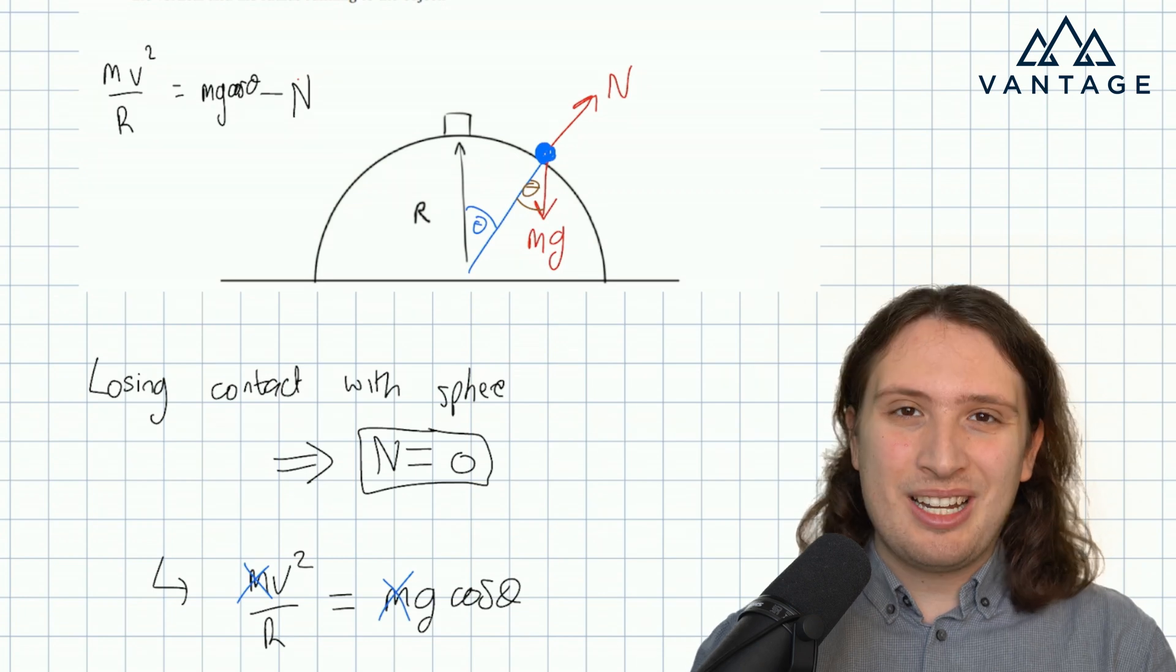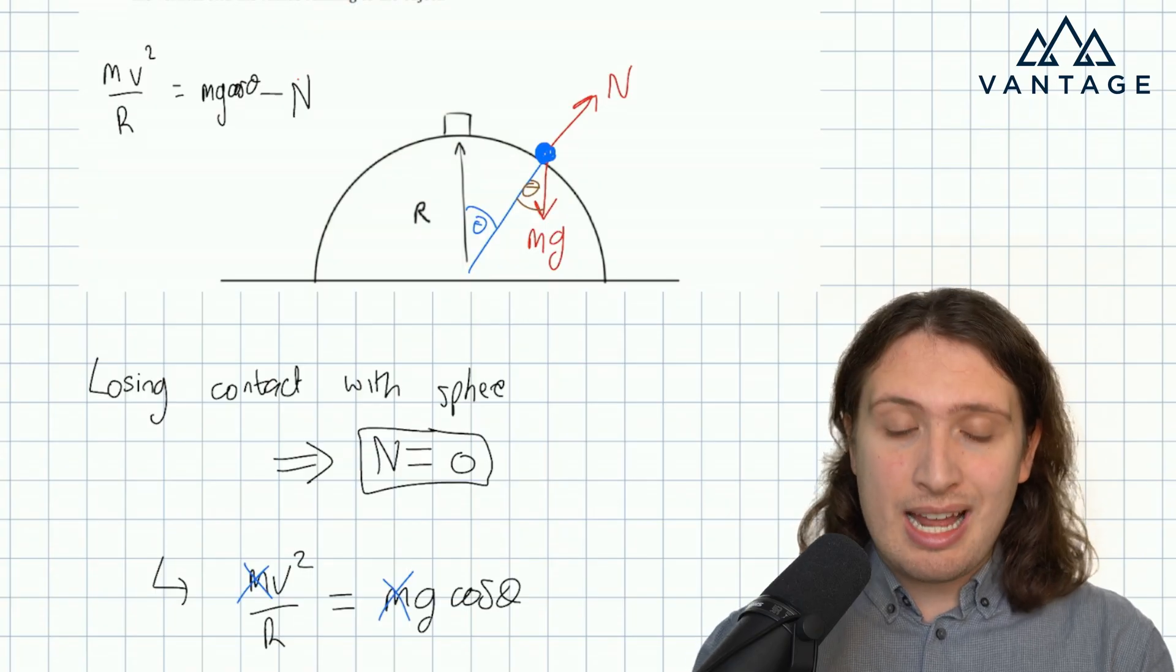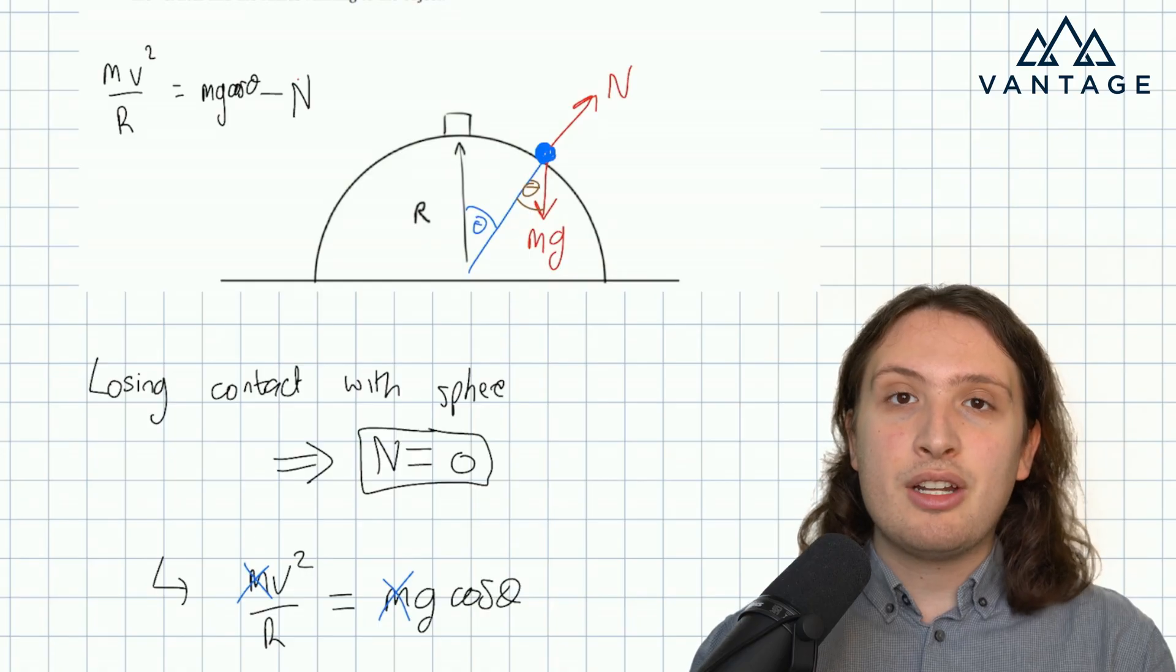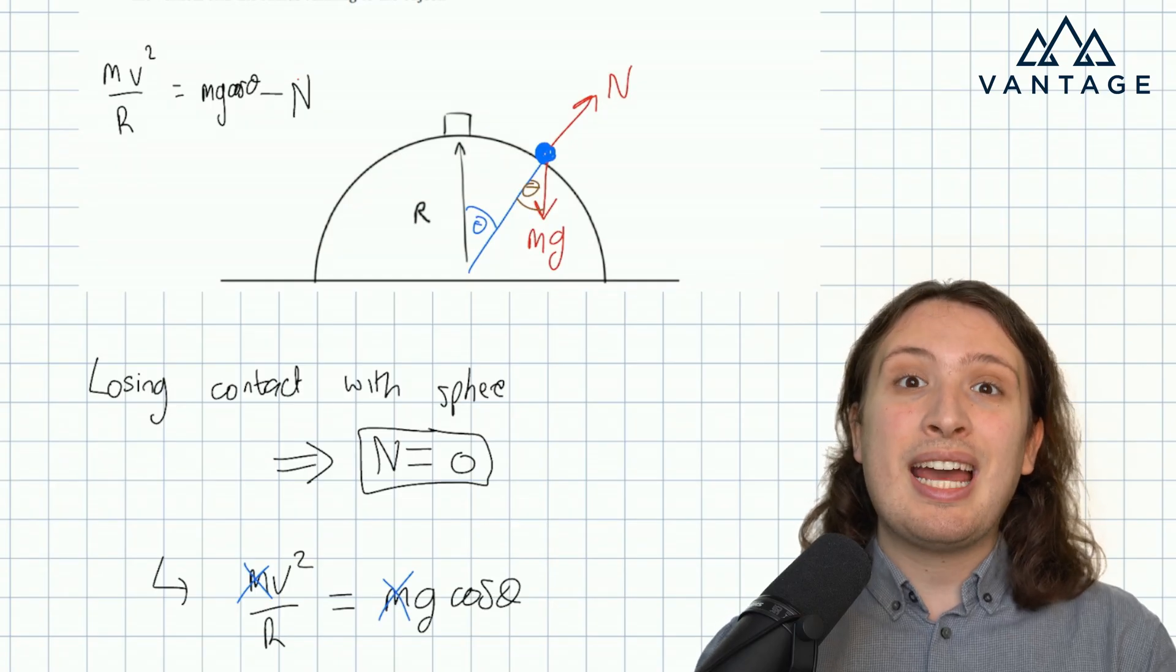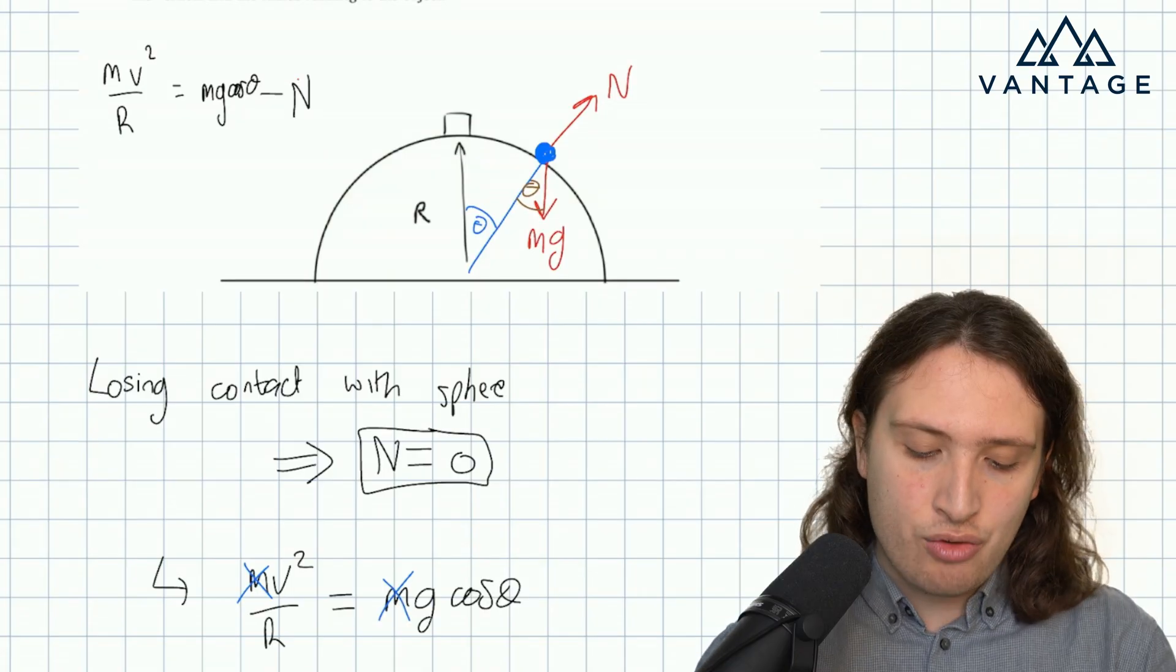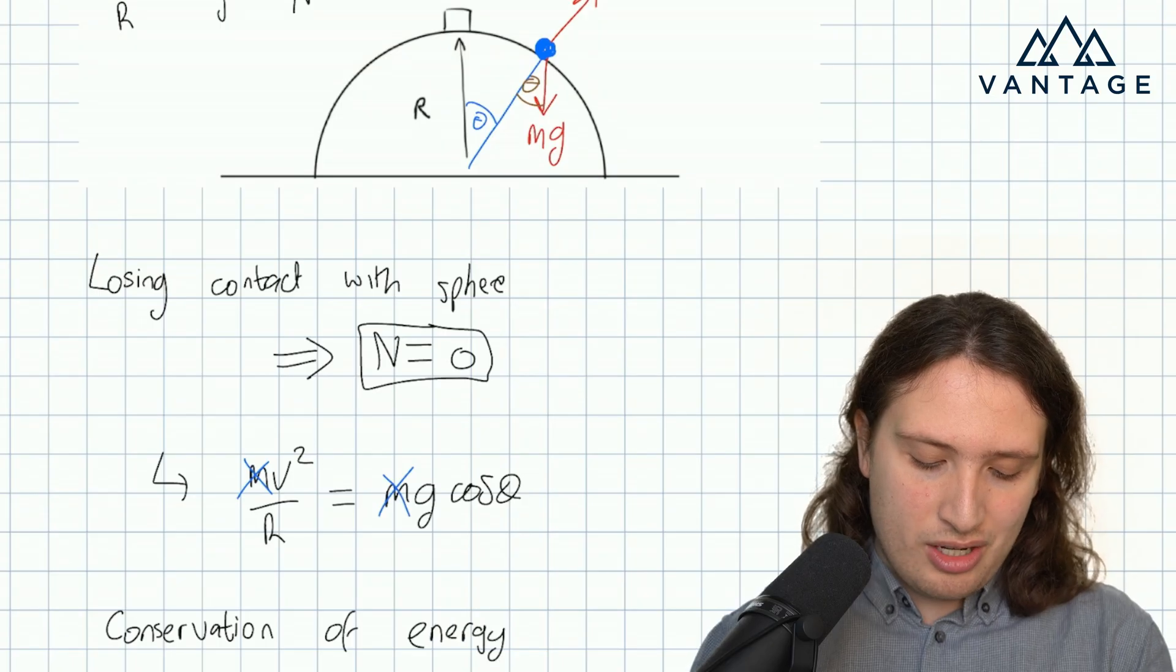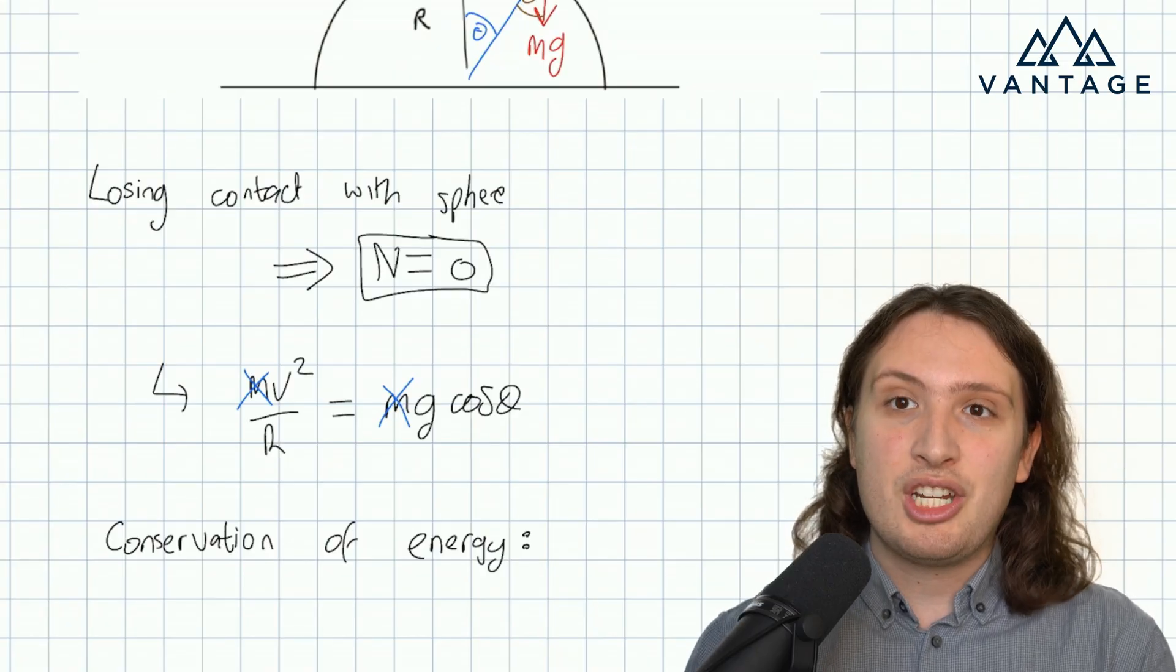However, we can use energy considerations. This is a real theme in interview questions, far more than in A-level, we're often going to need to use conservation of energy without being prompted to do so. In this problem, there is no friction, so no energy is being lost due to work done against friction. There's no more energy being input, so I know that the gravitational potential energy that I have at the start must match the sum of the GPE and KE at a general moment. This is a real theme in mechanics problems generally, that you can avoid grappling with differential equations, or at the very least you can deal with a nicer, lower order differential equation by prioritizing energy over force.